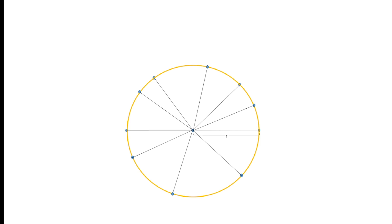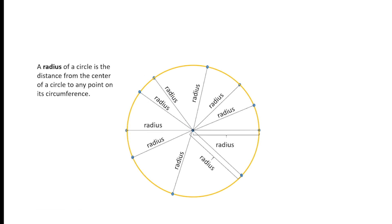The line segment from the center of the circle to any point on the circumference is actually the radius of the circle. Remember, all these line segments are equal and so all of them are known as radii. A radius of a circle is the distance from the center to any point on its circumference. In plural form, radius is actually radii.